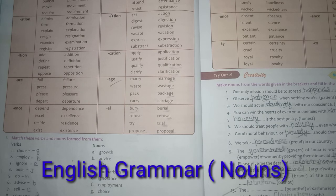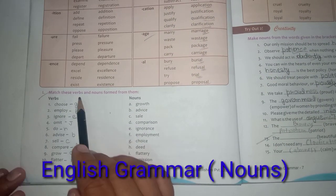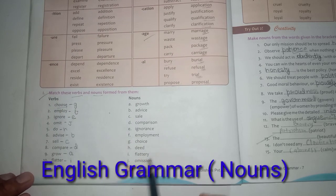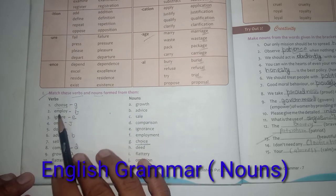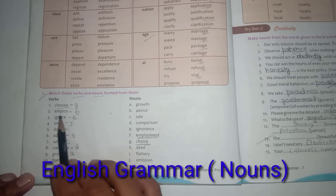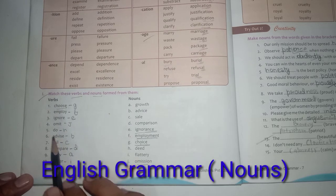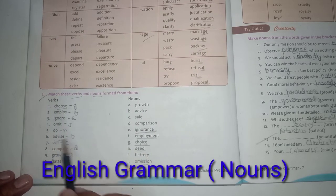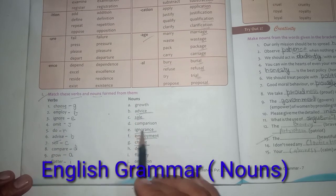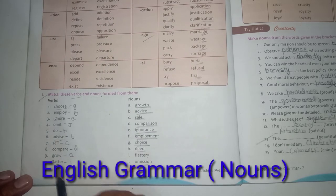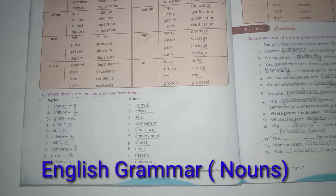Now an exercise: match verbs to their noun forms. Choose → choice, employ → employment, ignore → ignorance, omit → omission, do → deed, advice → advice, sell → sale, compare → comparison, grow → growth, flatter → flattery. In this way verbs are connected to their noun forms by adding different suffixes.